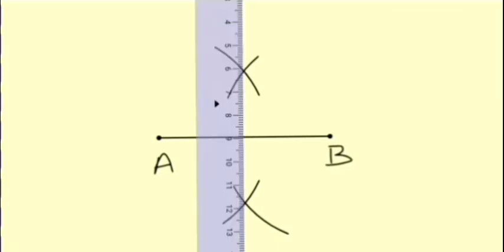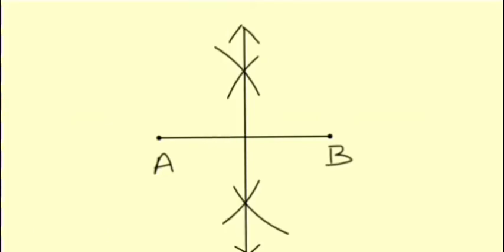Keep your scale in this position and then draw a line passing through these points. This line is called the perpendicular bisector and we may name it as CD.